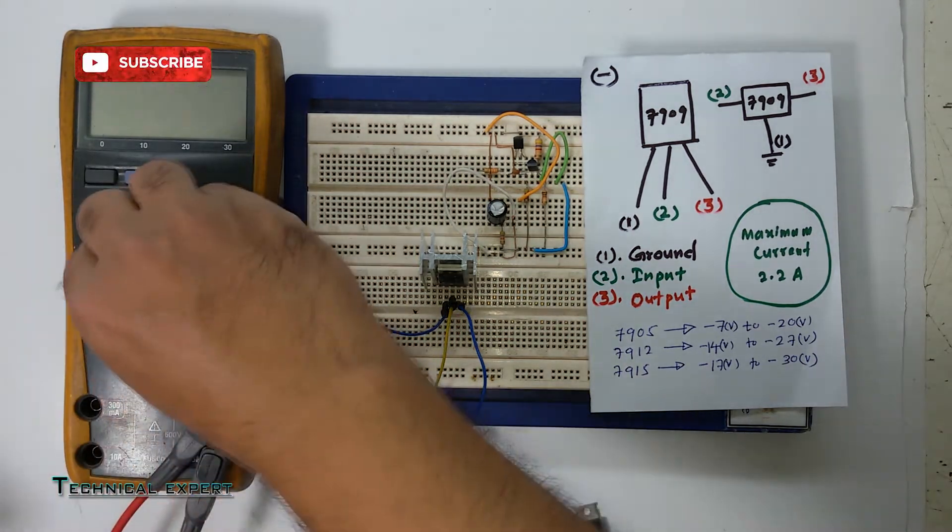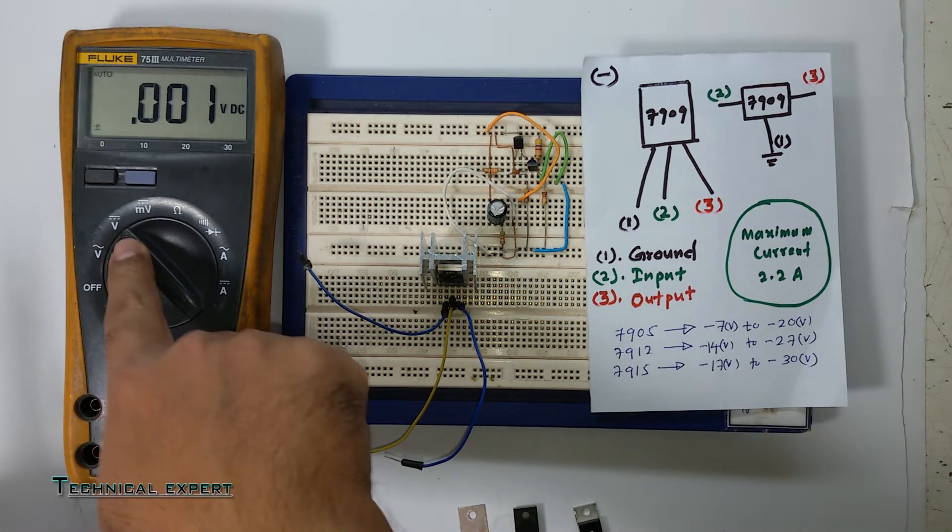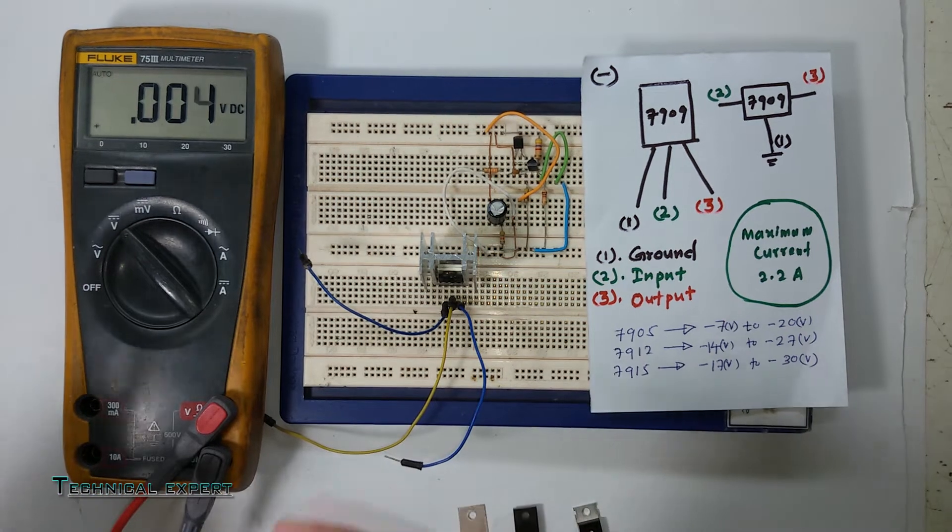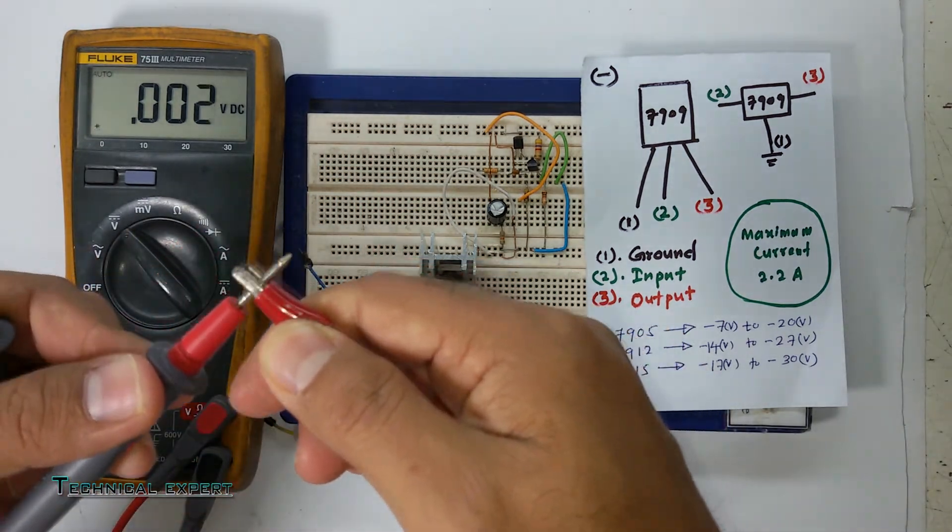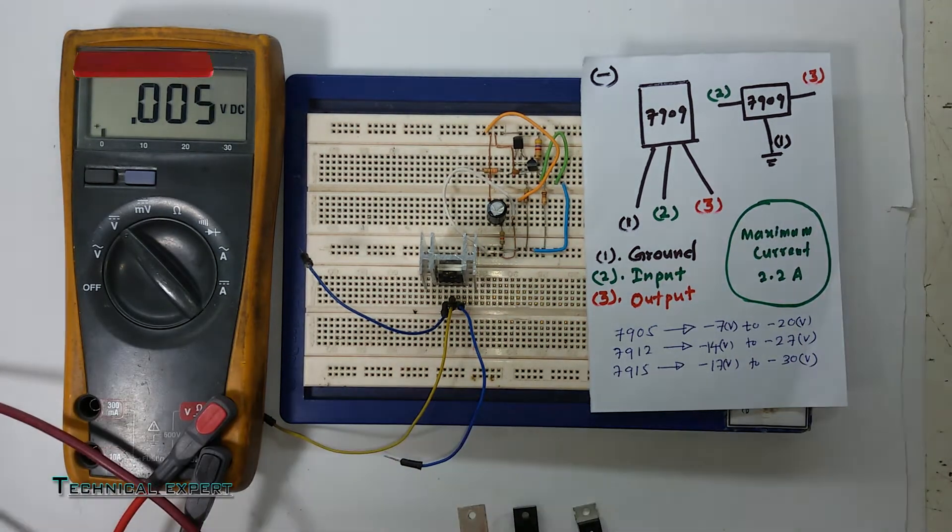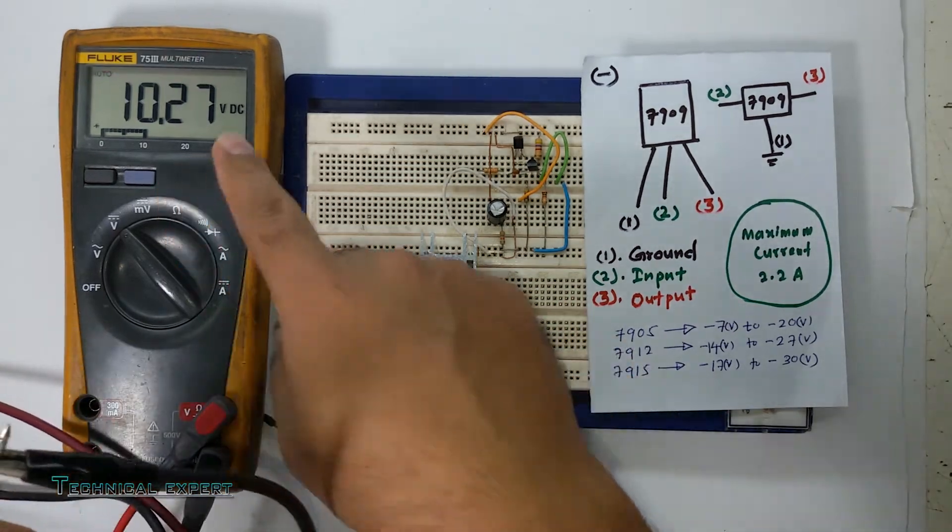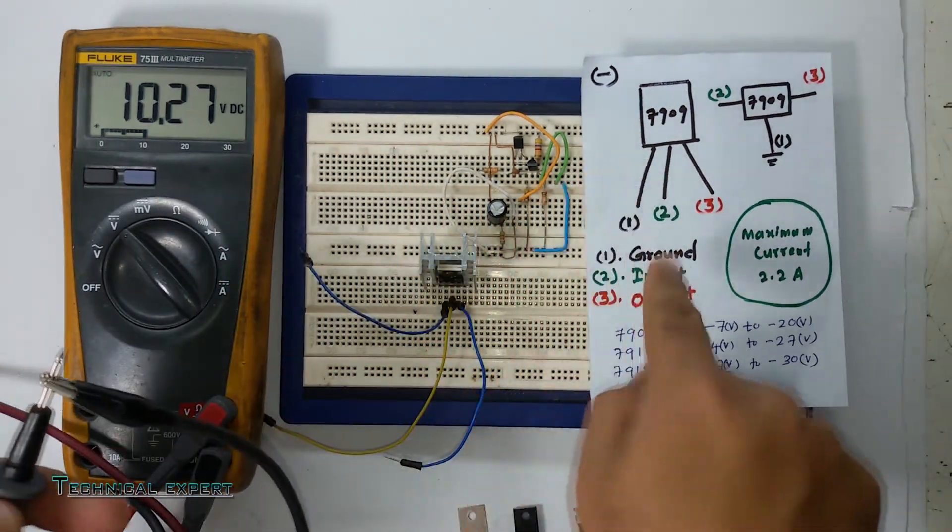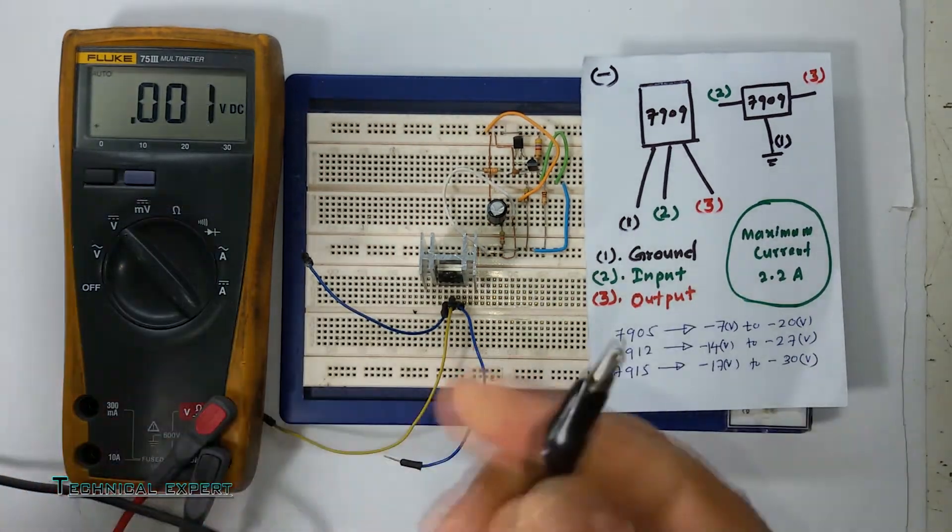We select the multimeter on DC voltage. We will check the input—how much we have here. This one is the positive probe, this one is negative. We are applying approximately 10 volts to the input.